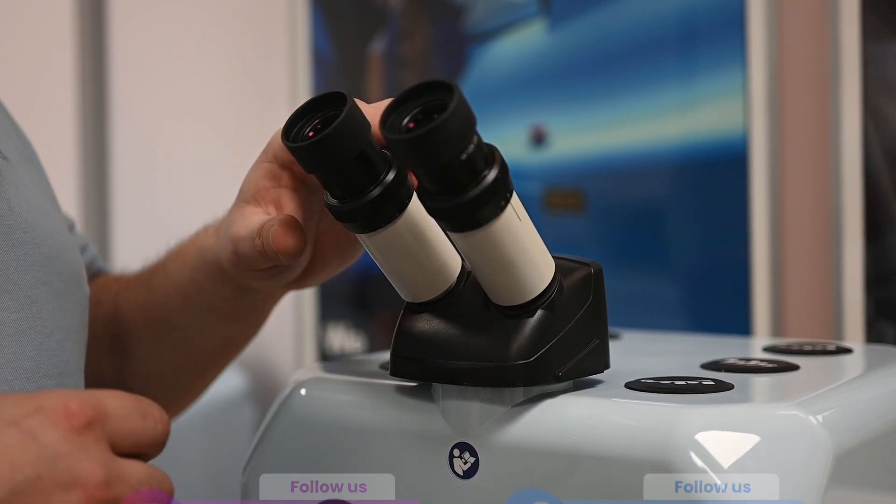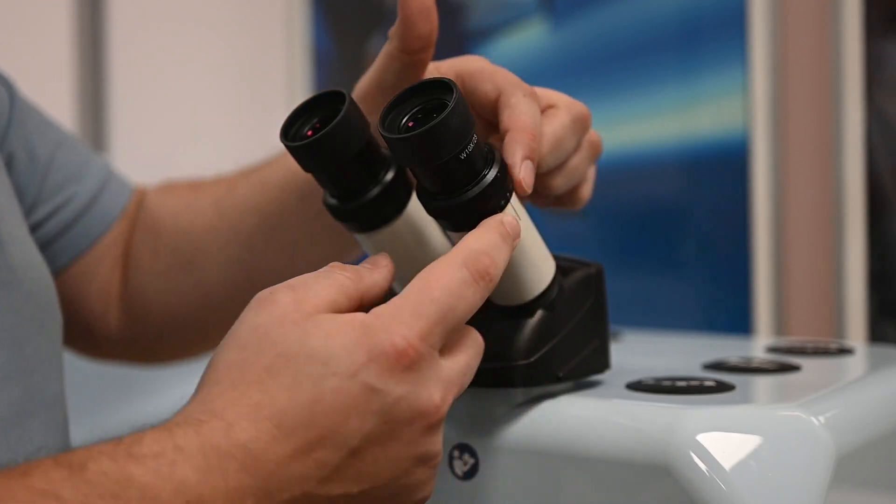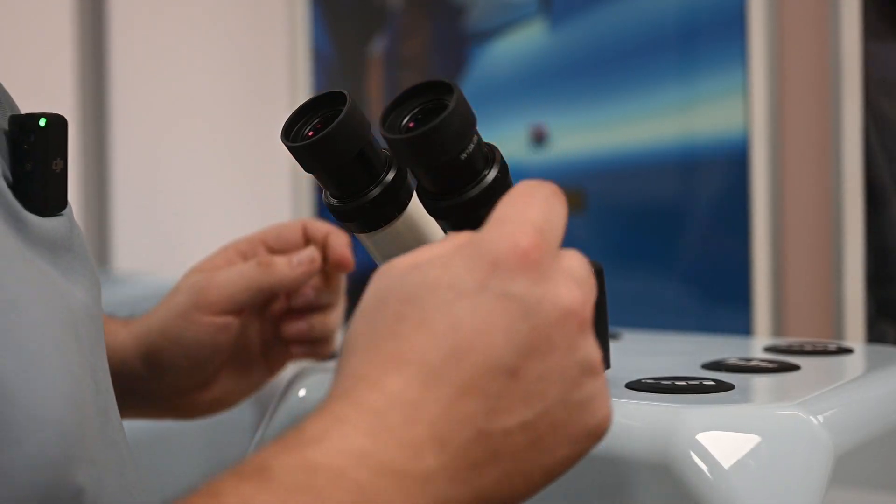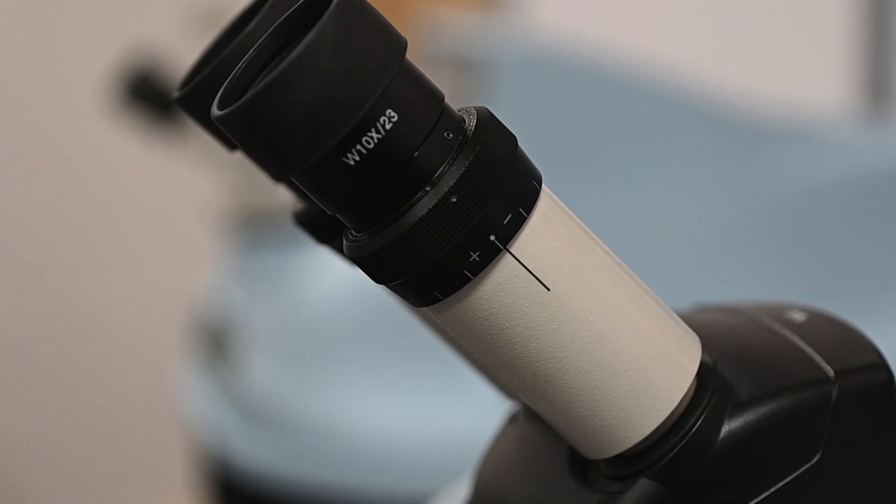You want to start with your eyepieces on the level here. You can see on the side here that the black line lines up with that center point, with a plus and minus either side.